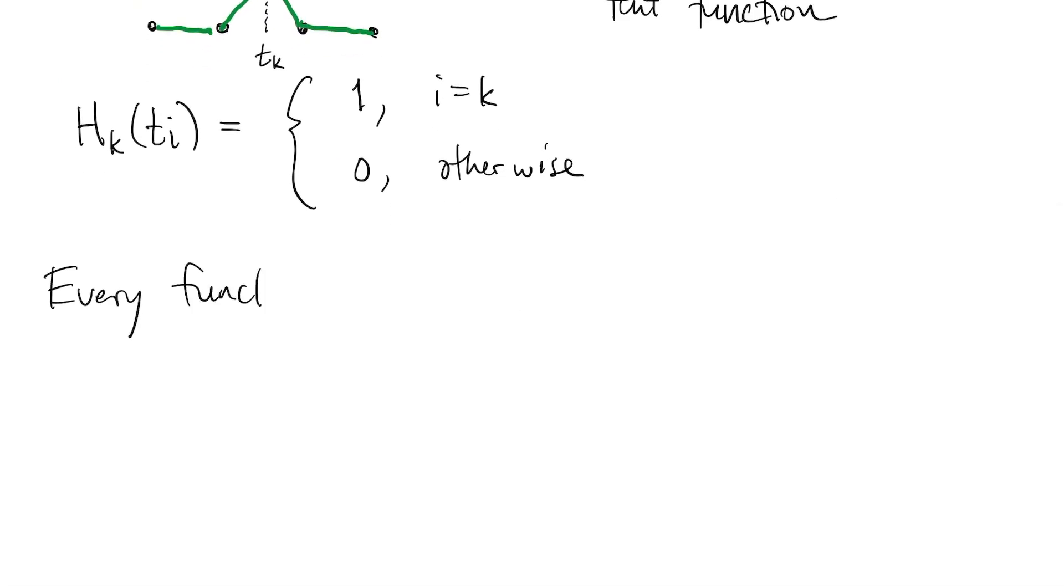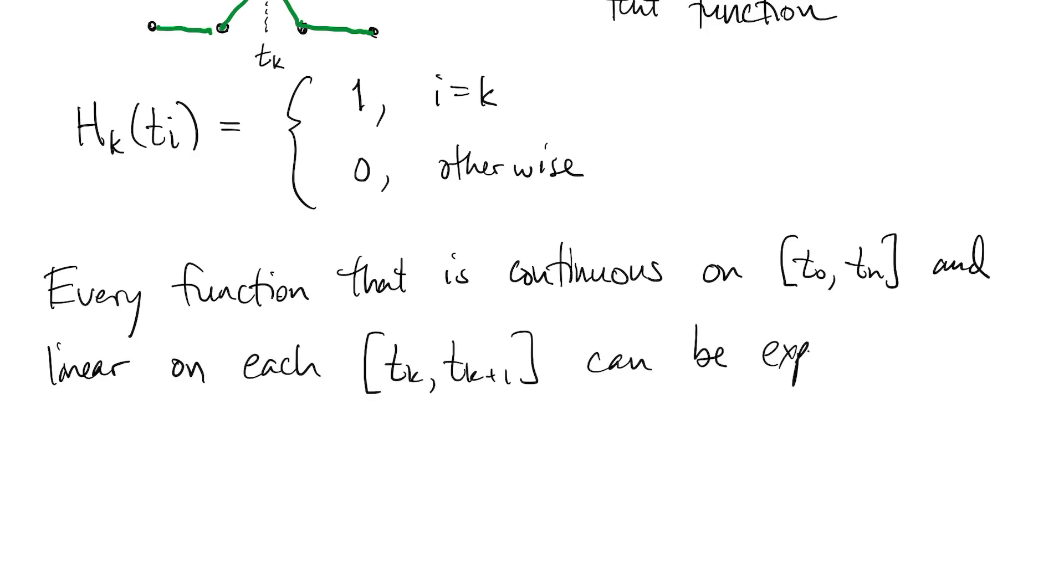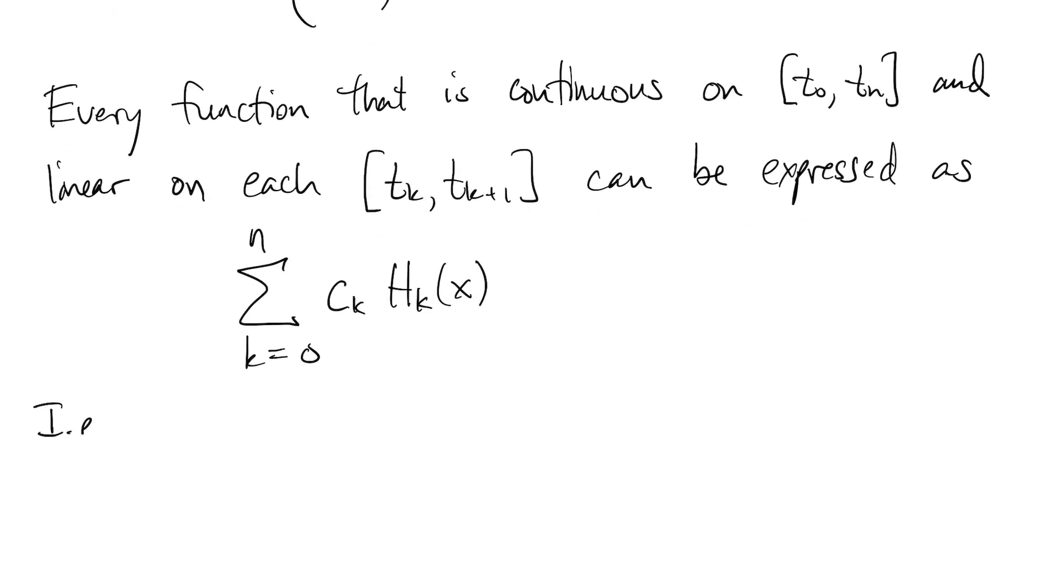It can be shown that any function that is piecewise linear and continuous over the whole interval, from T0 to Tn, can be written as a linear combination of these hat functions. It also turns out that there's no way to find a smaller collection of functions that have the same property, and we say that the hat functions form a basis for piecewise linear interpolation.